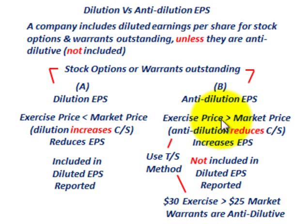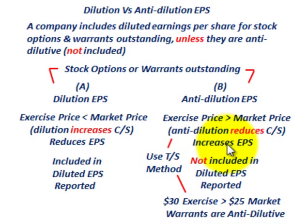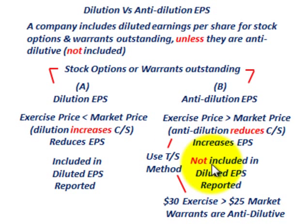With anti-dilutive earnings per share, the exercise price is greater than the market price. With an anti-dilution, you're going to reduce the common stock outstanding, and by doing that you're going to increase the earnings per share. In that case, you would not include those stock warrants in your diluted earnings per share that's reported in your financial statement. We're going to use the treasury stock method to make our calculations.